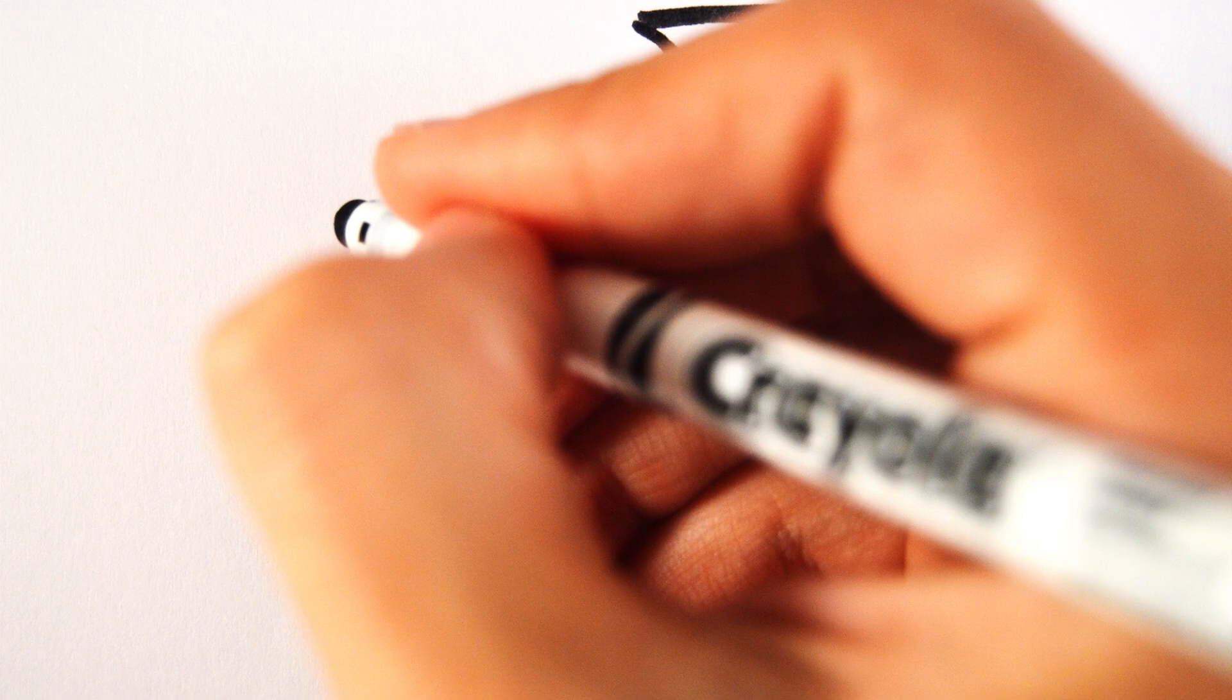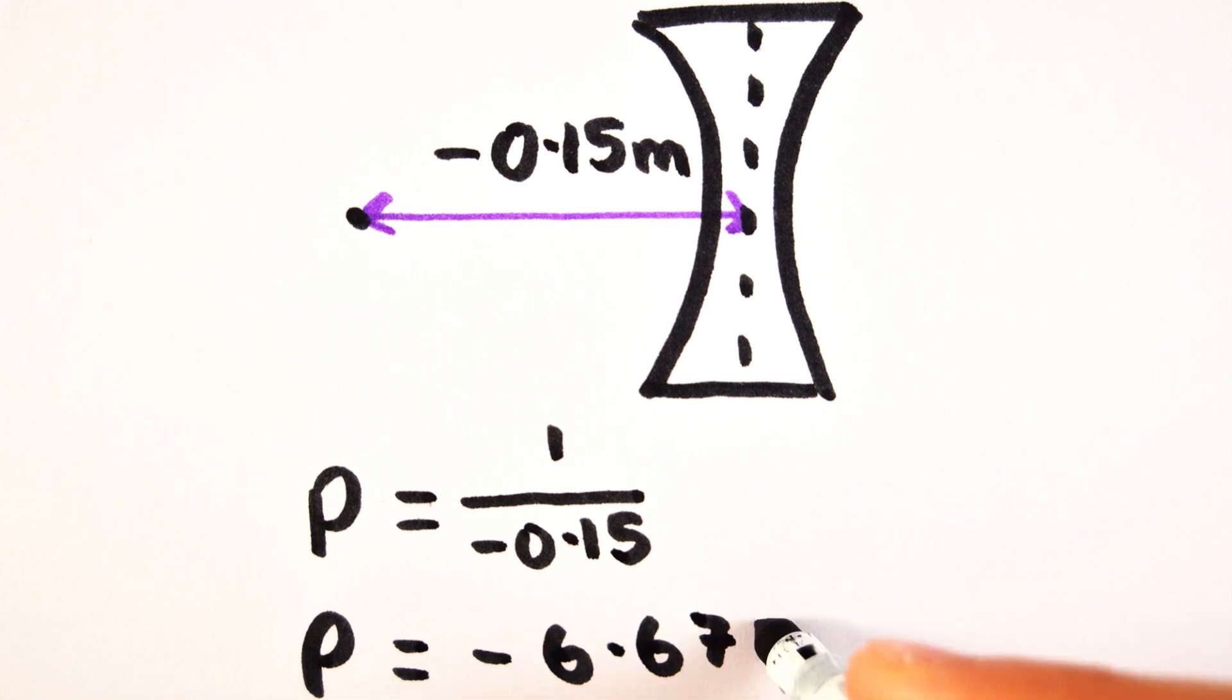For example, a diverging lens with a focal length of minus 0.15 meters has a power of minus 6.67 diopters.